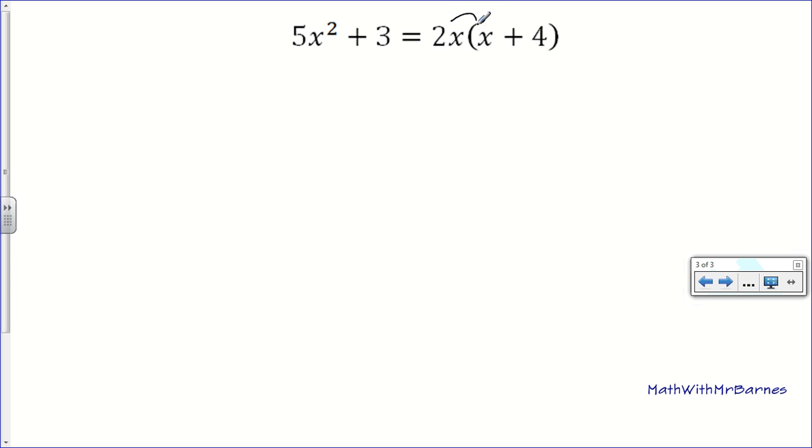So, take the 2x and we'll go through. Just like that. So, I get 5x squared plus 3 is equal to 2x squared plus, and then 2x times, so that's 8x.